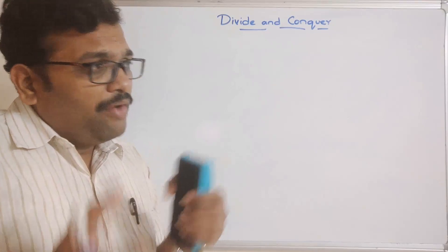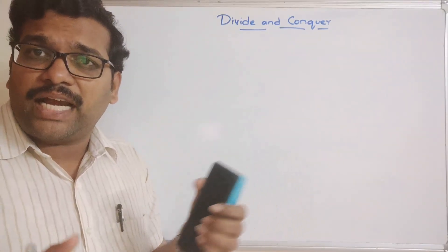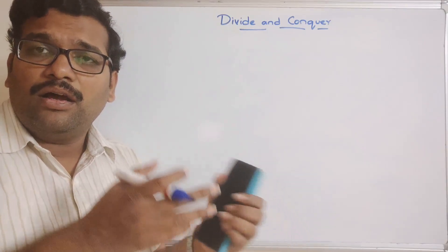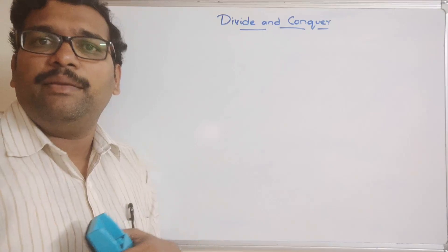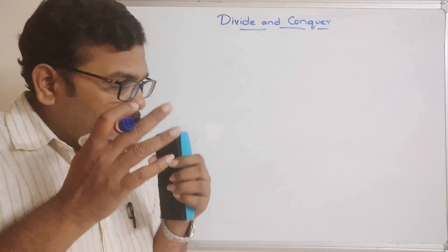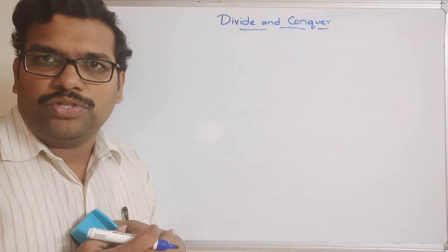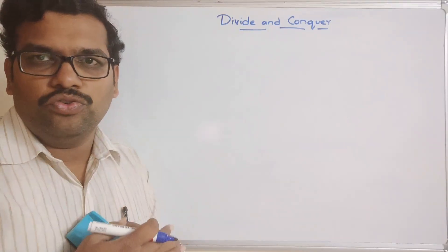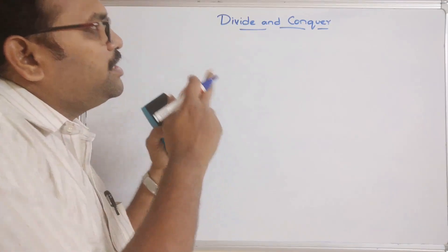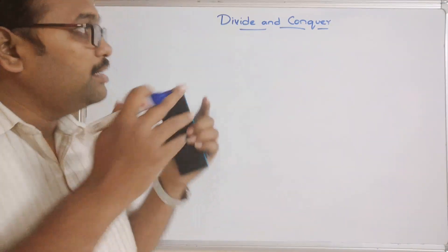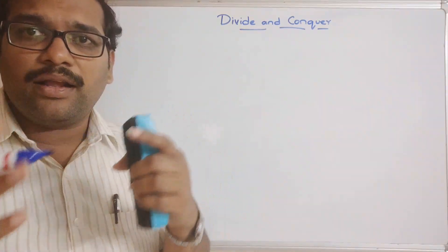In our first sessions we have seen there are different strategies like divide and conquer, dynamic programming, greedy method, etc., in order to solve any problem. The main goal is to achieve the optimal solution. One of the strategies is divide and conquer, and it has three parts: divide, conquer, and combine.